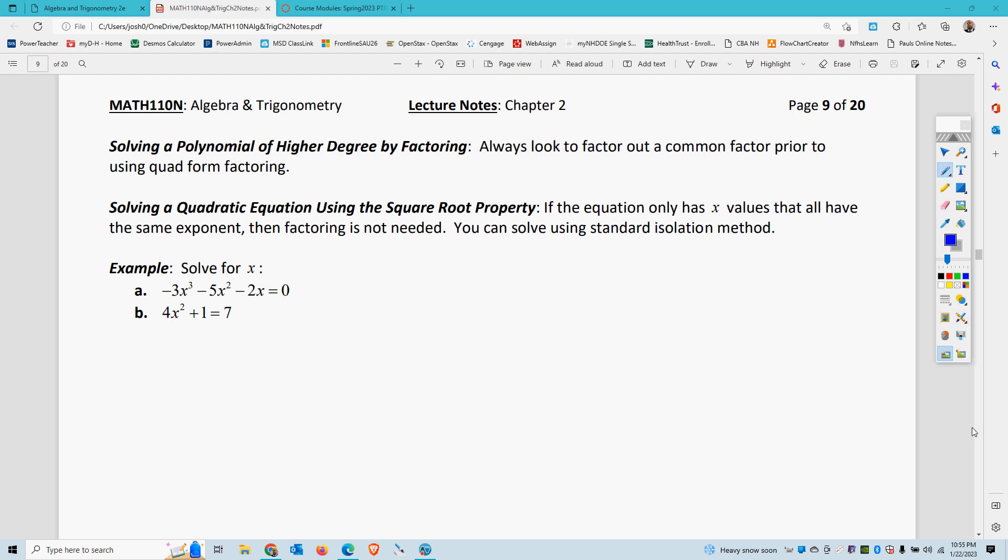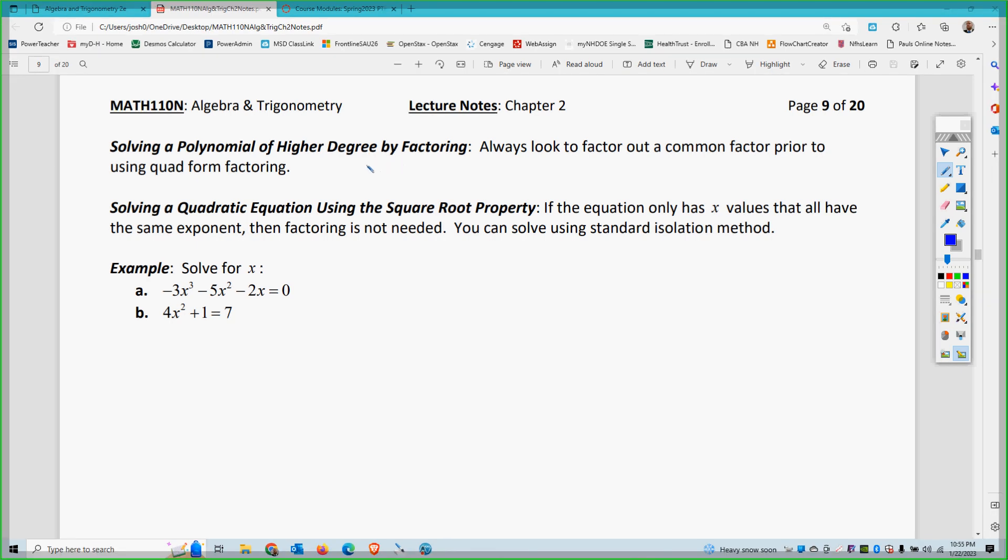So if you have higher degrees, such as 3, 4, 5, 6, 7th power, keep going up, you can still do factoring. Just look to factor out a common factor prior to actually doing quad-form factoring. And then you can also do a mixture of solving methods of isolation and factoring.